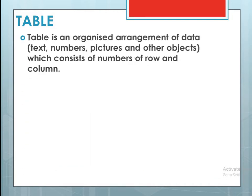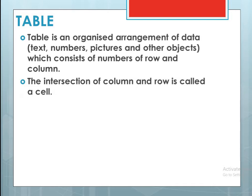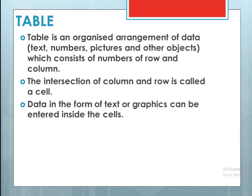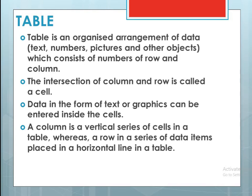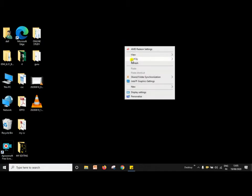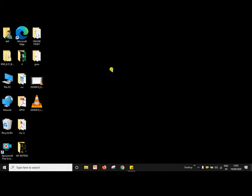A table is an organized arrangement of data — text, numbers, pictures, and other objects — which consists of rows and columns. The intersection of a column and a row is called a cell. Data in the form of text or graphics can be entered inside the cells. A column is a vertical series of cells in a table, whereas a row is a series of data items placed in a horizontal line. Now we will learn how to create a table in Microsoft Word.